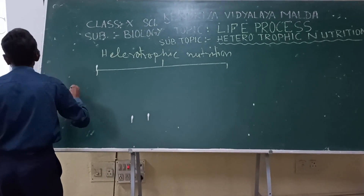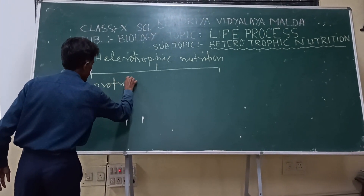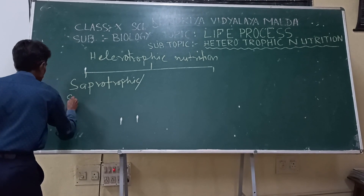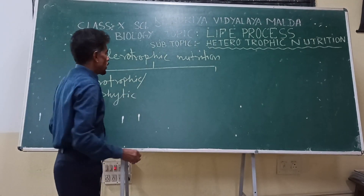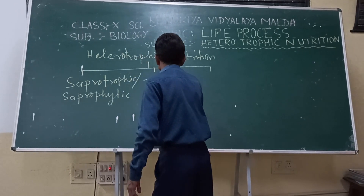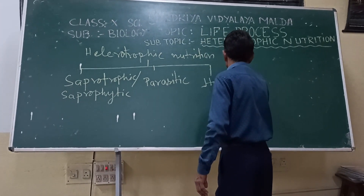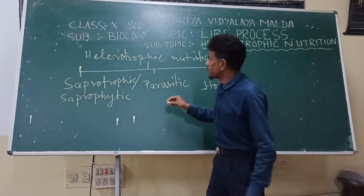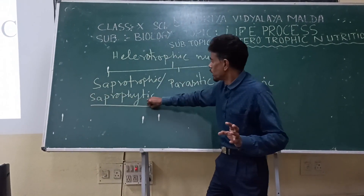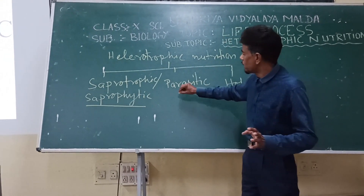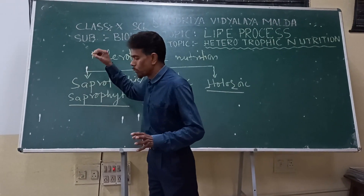Heterotrophic nutrition is divided into three types: the first is saprotrophic, the second is parasitic, and the third is holozoic. So this basic heterotrophic mode of nutrition is categorized into saprotrophic nutrition, parasitic mode of nutrition, and holozoic mode of nutrition. We shall take up all these one by one.